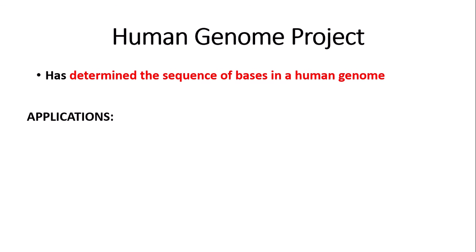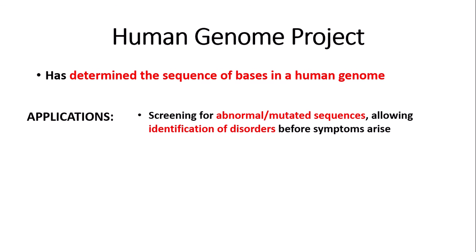This has many applications. For example, the screening of abnormal or mutative sequences, which allows the identification of disorders before symptoms arise. This is particularly useful in neurodegenerative diseases such as Huntington's disease, as symptoms may not arise until the late 30s. Therefore personalised treatments can be given before symptoms arise, giving you the best chance of a cure.